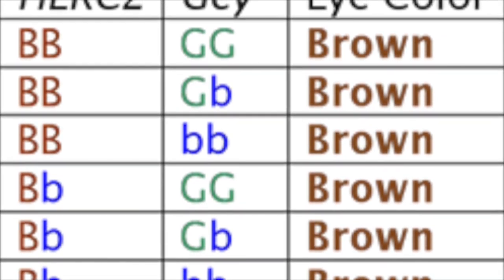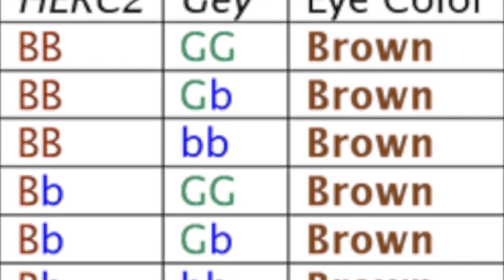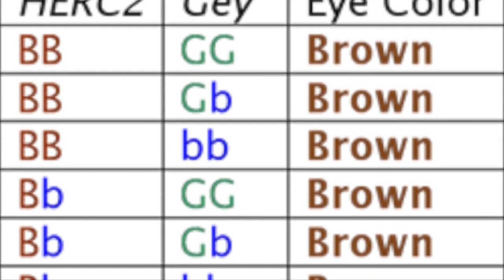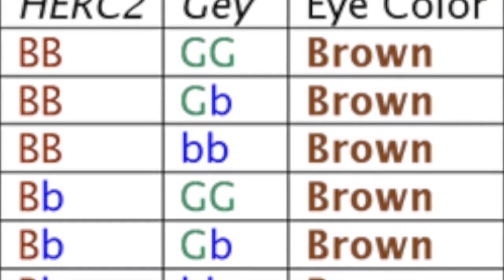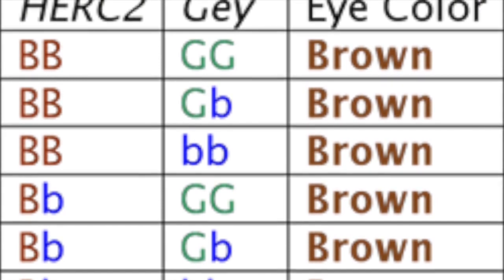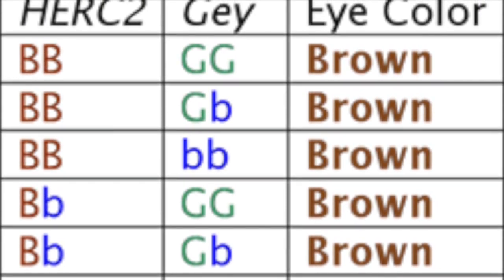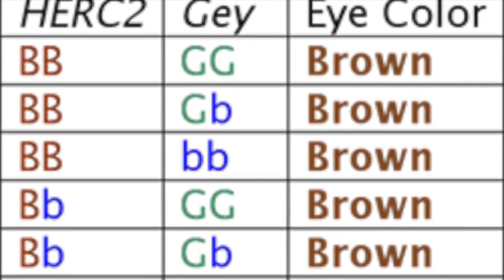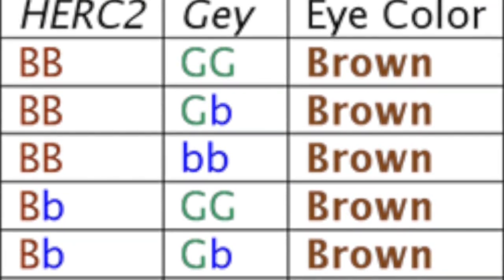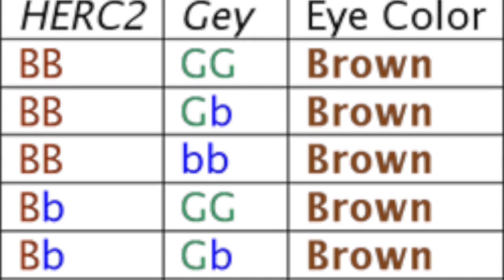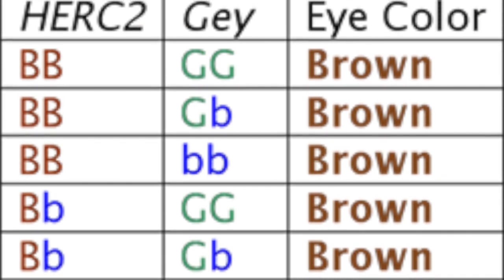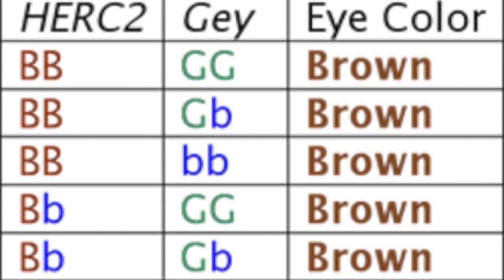This means that brown is dominant over green, which is dominant over blue. Eye color inheritance is considered a polygenic trait, meaning that it is controlled by the interactions of several genes, not just one.